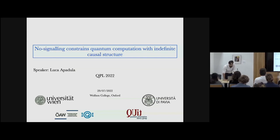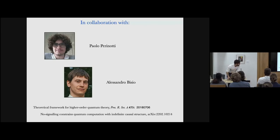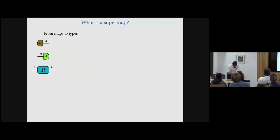Hello everybody. I would like to thank the organizers for letting me present my last work, done in collaboration with Paolo Perinotti and Alessandro Bisio. This is a second work following a previous one called 'Theoretical Framework for Higher-Order Quantum Theory,' where the authors provided a full mathematical characterization of all the layers of quantum supermaps. In this second work, we focused on the study of the compositional structures of these objects.